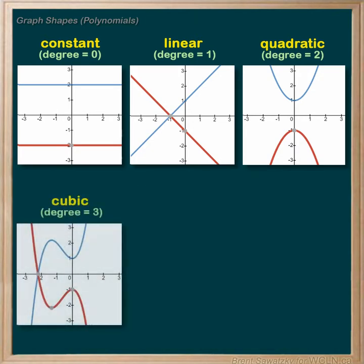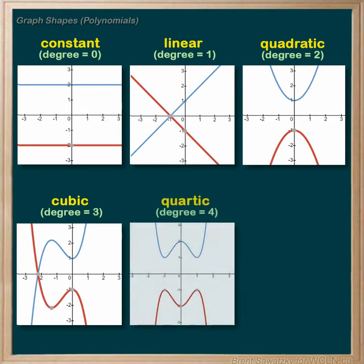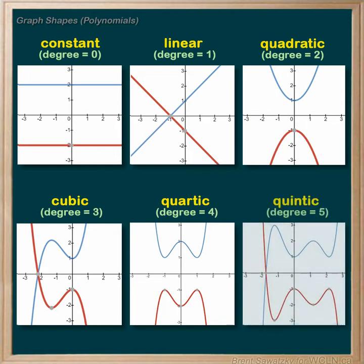A cubic is a polynomial with a degree of three and is generally shaped like this — positive in blue and the negative or reflection in red. A quartic has a degree of four; the positive is just a big W and the negative would be a big M. A quintic has a degree of five, again positive in blue and negative in red.